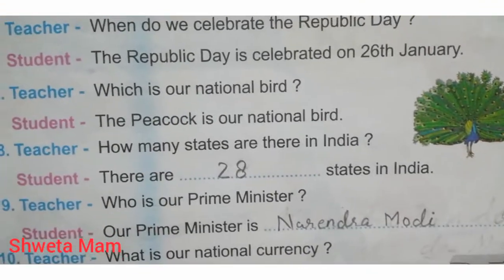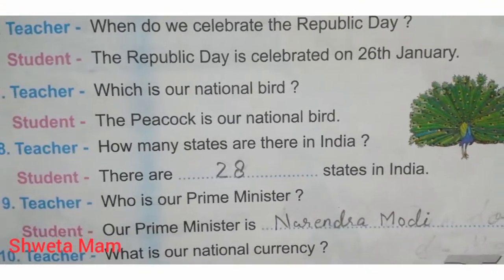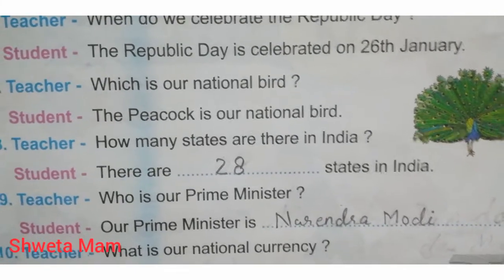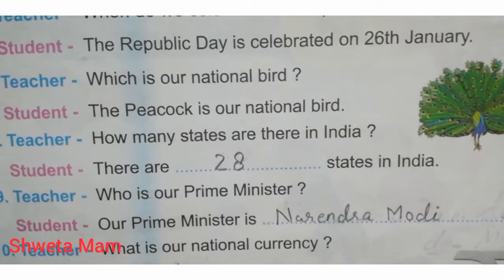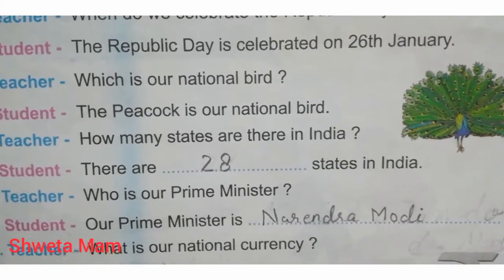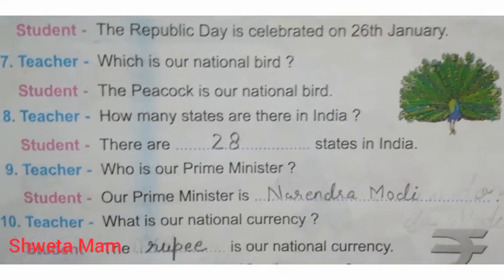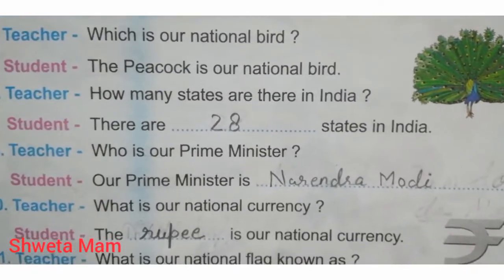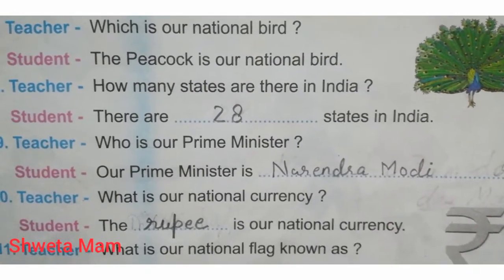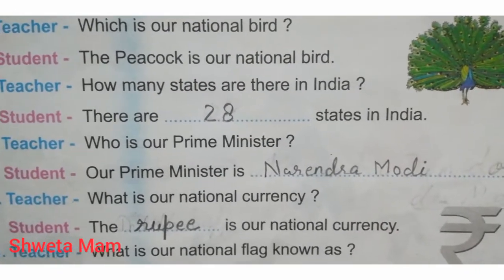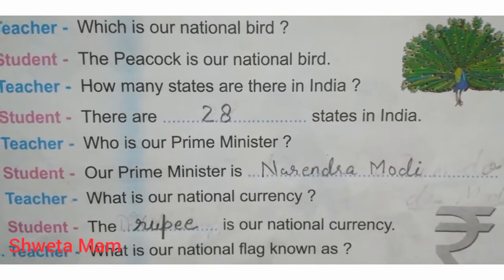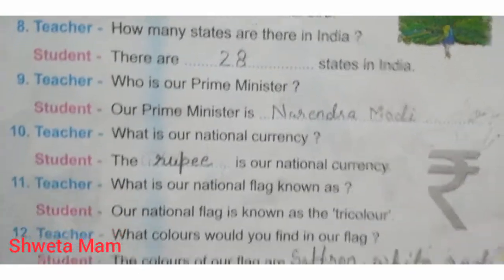Teacher: Which is our national bird? Student: The peacock is our national bird. Teacher: How many states are there in India? Student: There are 28 states in India.